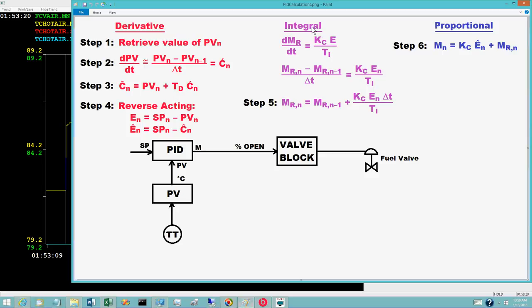Step 5 uses finite differences to integrate the control error E to compute a new value, M sub r sub n, for the controller output bias. Start with the differentiated form, Dm sub r dt equals K sub C e over T sub i for the integral mode equation. Approximate Dm sub r dt using the finite difference approximation, M sub r sub n minus M sub r sub n minus 1 over delta t.